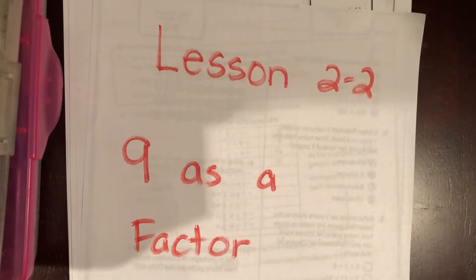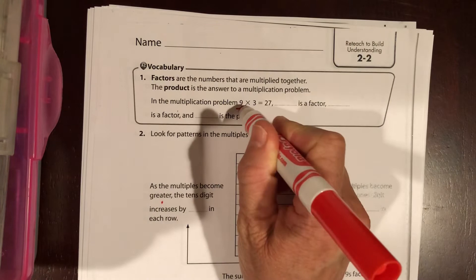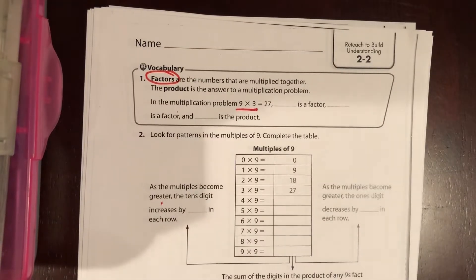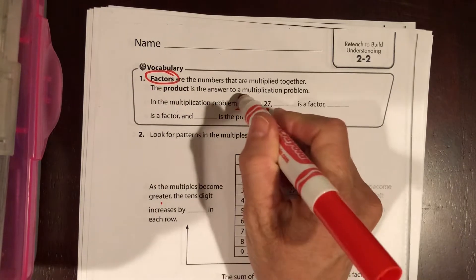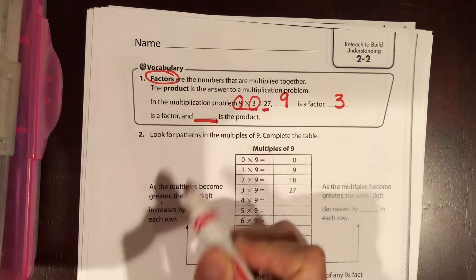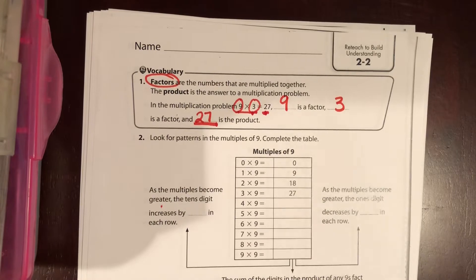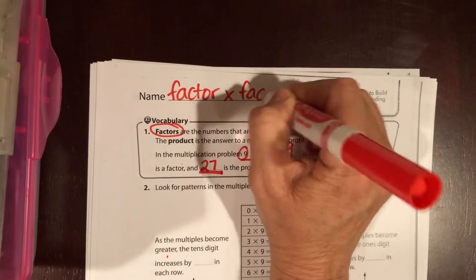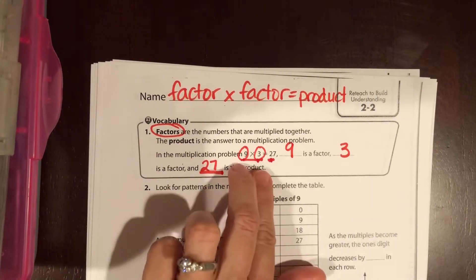We're going to do lesson 2-2: 9 as a factor, so we're basically going to be multiplying numbers times 9. When you are looking at a multiplication problem, the two numbers that you're multiplying are called factors, and the answer is a product. In the multiplication problem 9 times 3 equals 27, 9 is a factor, 3 is a factor, and 27 is the product. Up on the top right, write: factor times factor equals product.